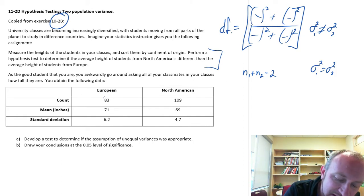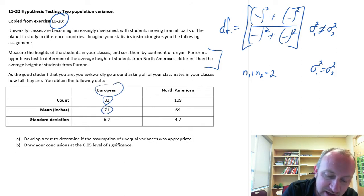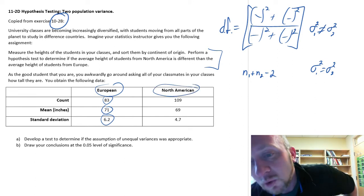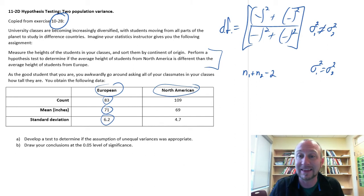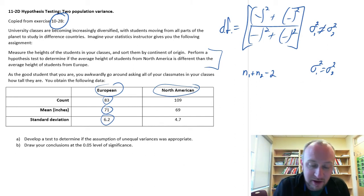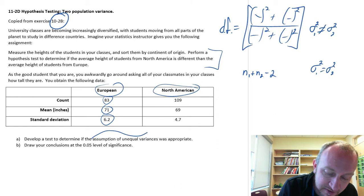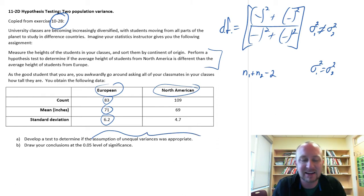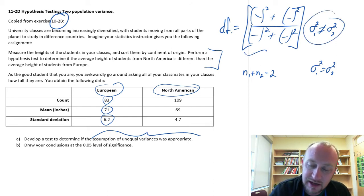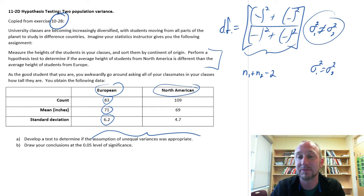Here I have 83 European students with an average height of 71 inches and standard deviation 6.2, and here's the information for the North American students with 109 students, mean of 69 inches, and standard deviation 4.7. What we want to do in this exercise is determine whether the assumption of unequal variances was appropriate. If you go back and watch exercise 10-2B, you'll see that we assumed unequal variance and calculated degrees of freedom using the big formula. Now we're going to test whether that was really necessary.